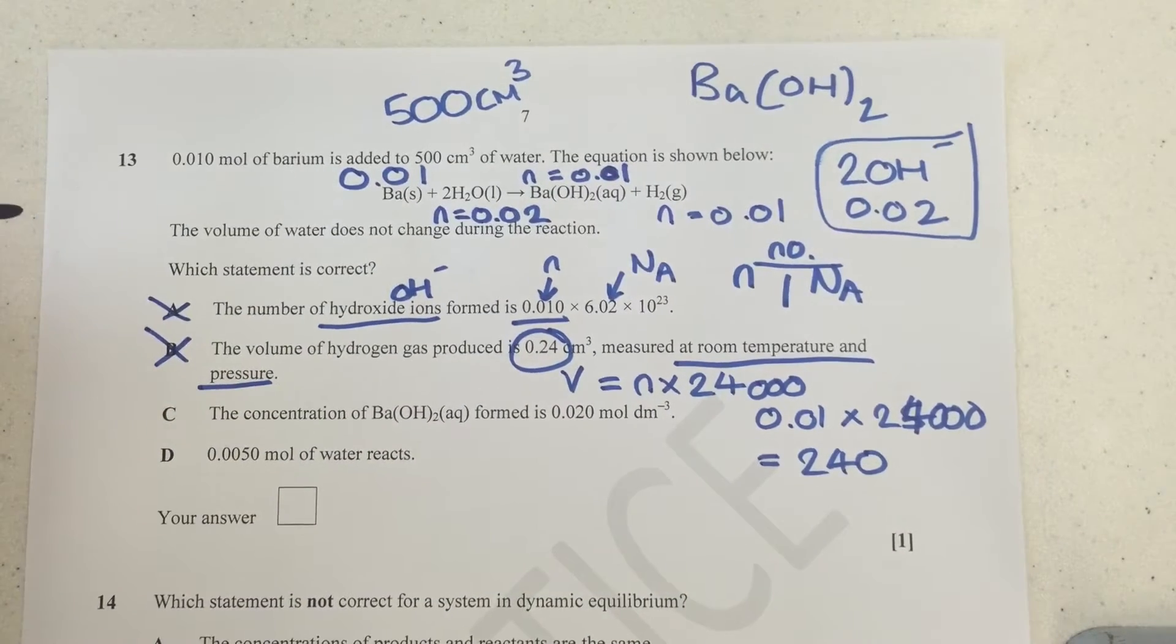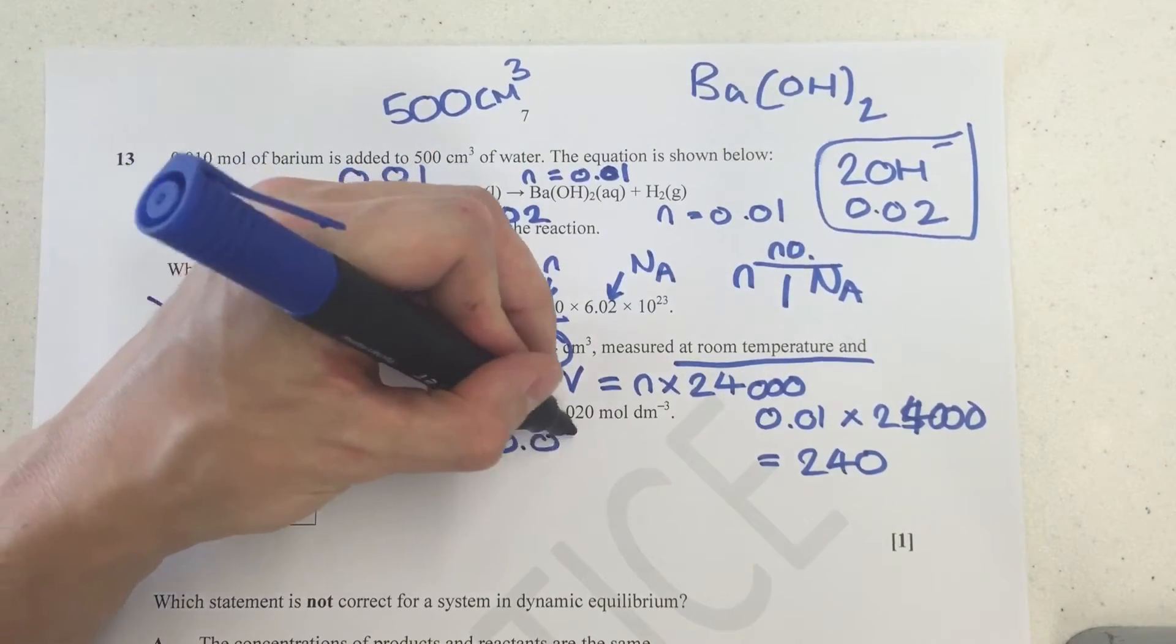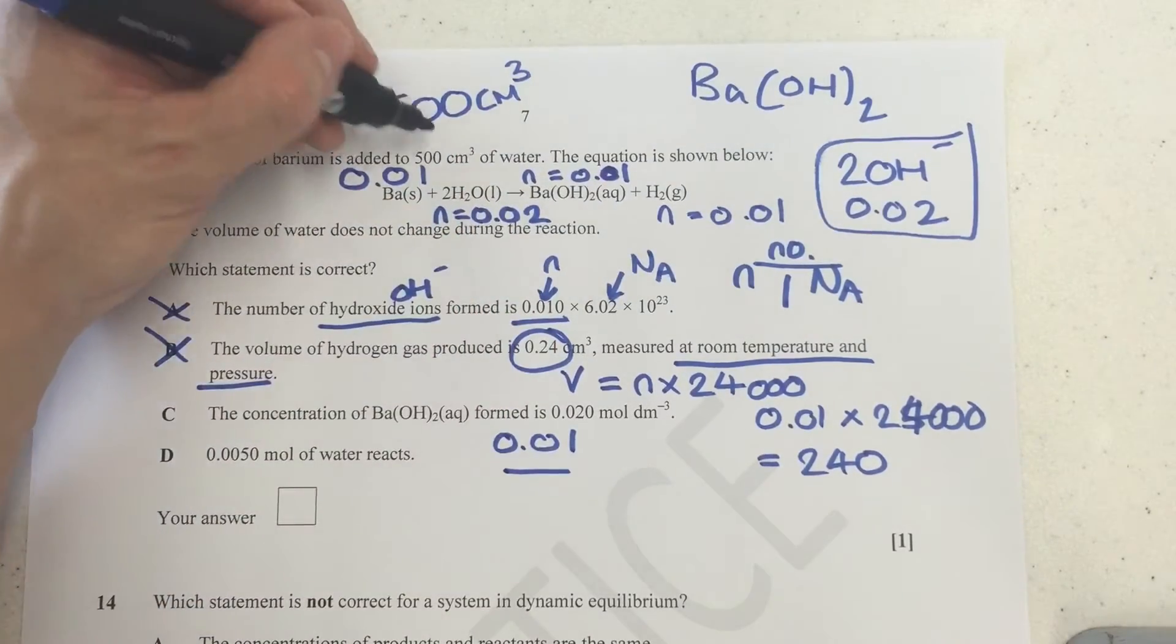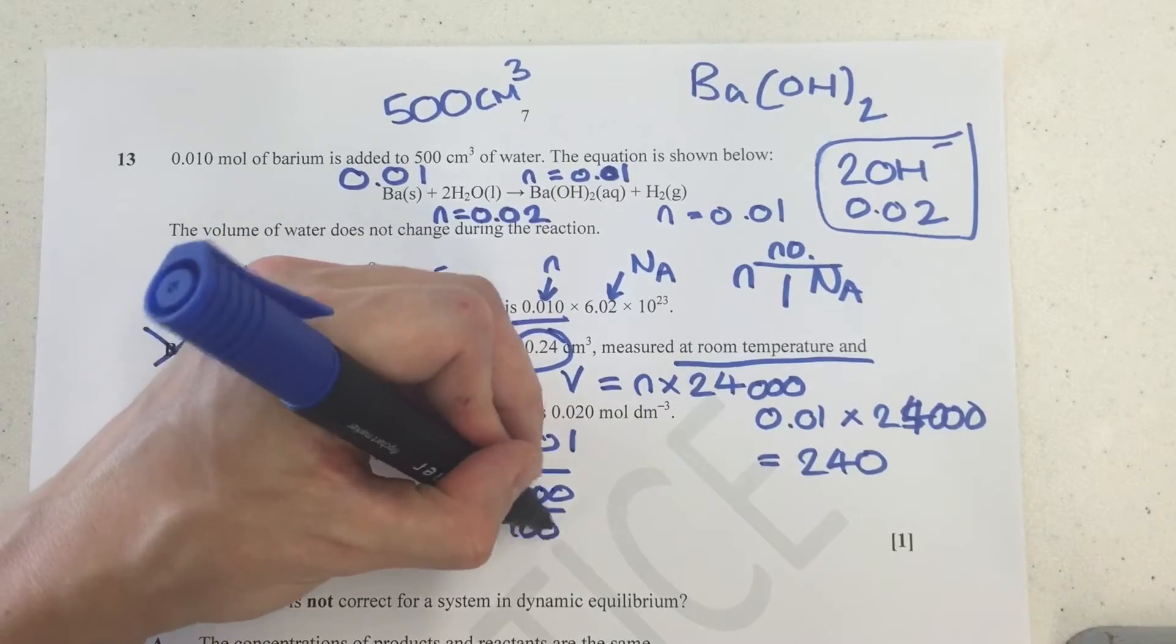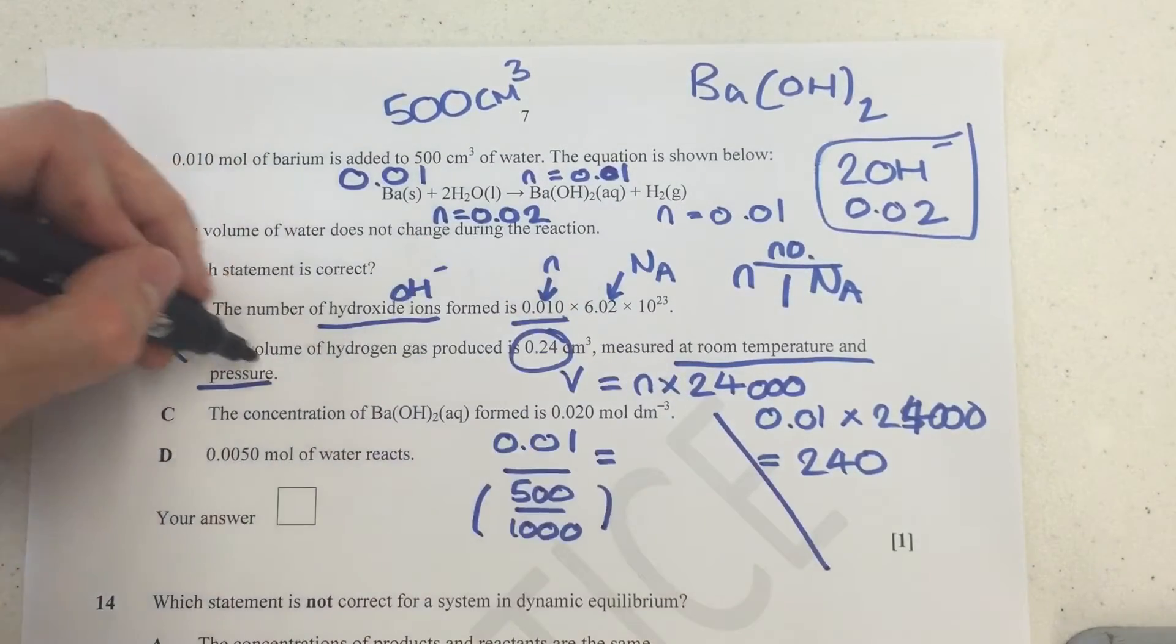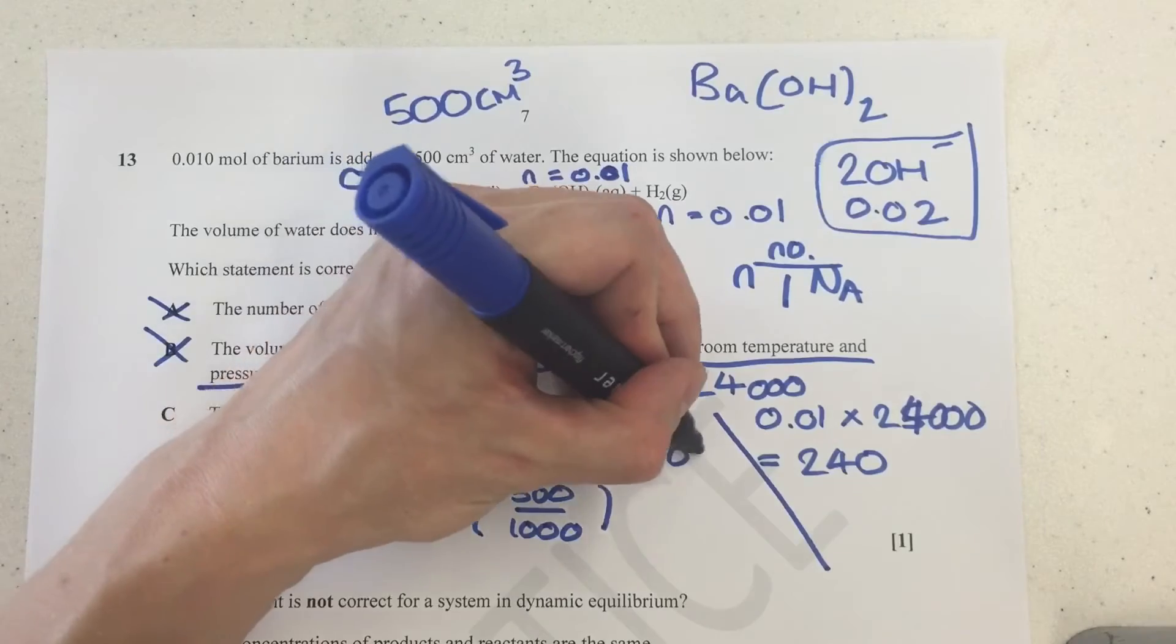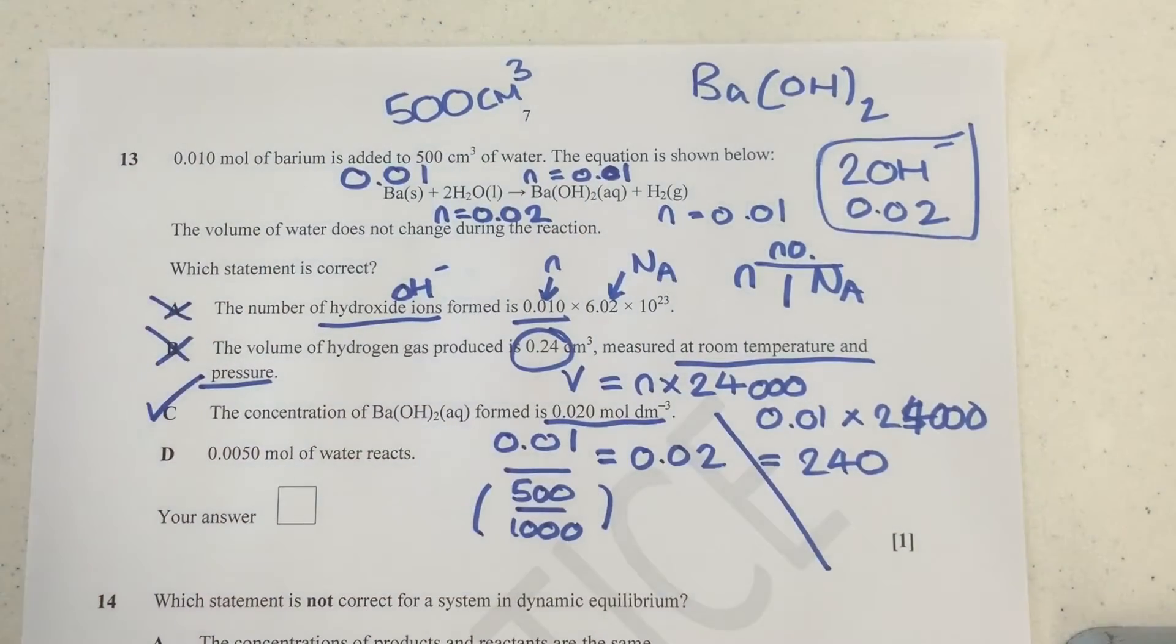The concentration of barium hydroxide formed is 0.02 mol per decimeter cubed. Well let's find out. So we've got 0.01, which is our moles of barium hydroxide, and we're going to divide by 500 over 1,000 here to get it into moles per decimeter cubed. And our answer for this one actually comes out as 0.02. Brilliant. That actually is that number. So this at the moment is my absolute winner.